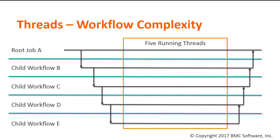The other main component of BAO's memory utilization is threads. Among other things, BAO uses one thread for each running workflow — that is, not one thread for each root job, but one thread for each workflow that has started but not ended. If you have your main workflow A, which calls child workflow B, which calls C, all the way down to Z, your one job is actually using 26 threads.